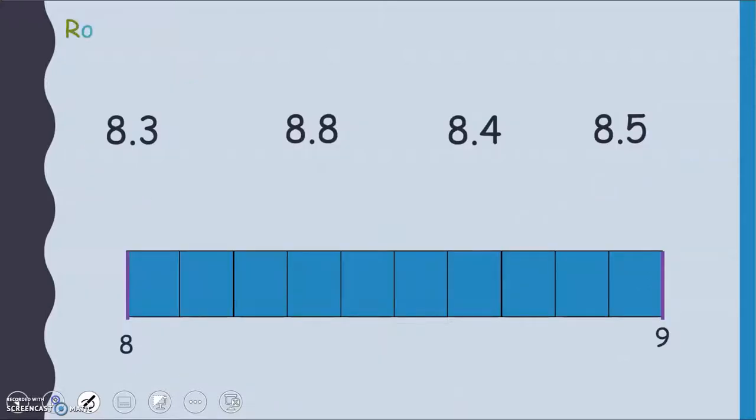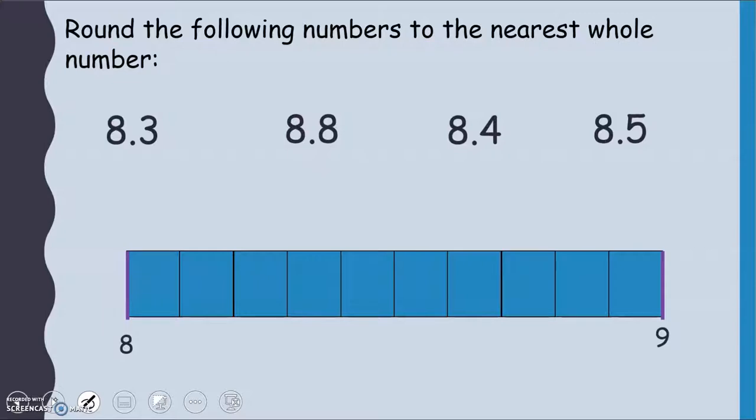Here we are going to round the following numbers to the nearest whole number. The first one I want to round is 8.3. If we have a look along the bottom, I've got 10 boxes with 8 at one end and 9 at the other. So 8.3 is going to be roughly about here on my diagram. As we can see, I'm much closer to 8 than I am to 9, so rounding to the nearest whole number is going to be 8.